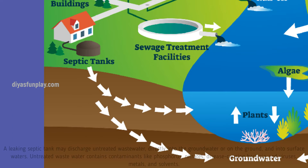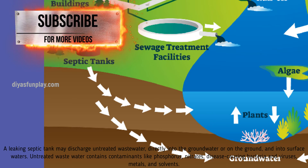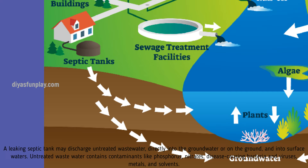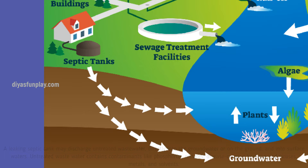Septic tanks. A leaking septic tank may discharge untreated wastewater directly into the groundwater, or on the ground, and into surface waters. Untreated wastewater contains contaminants like phosphorus, nitrates, disease-causing bacteria and viruses, metals, and solvents.